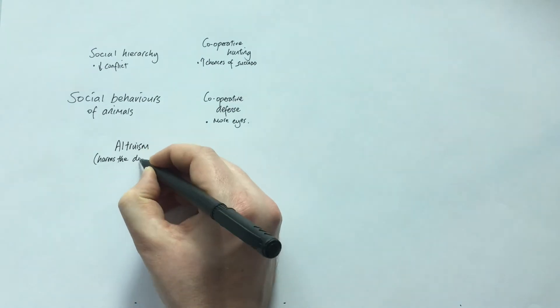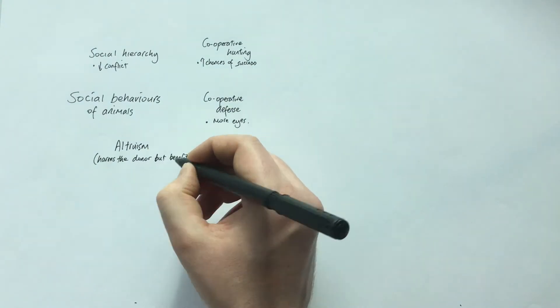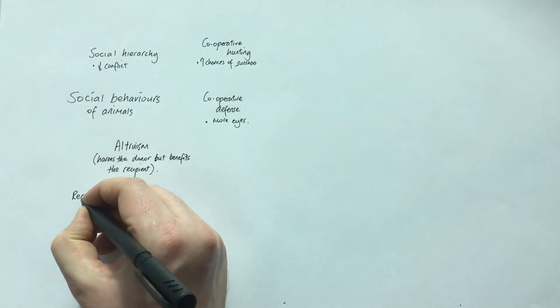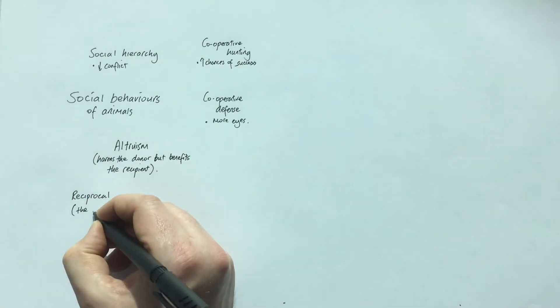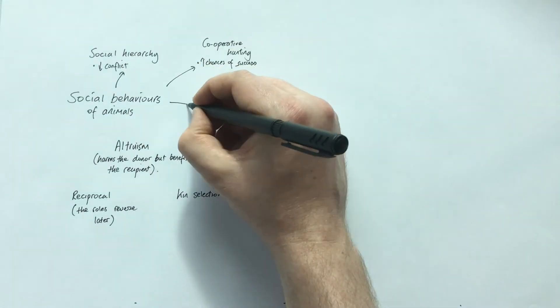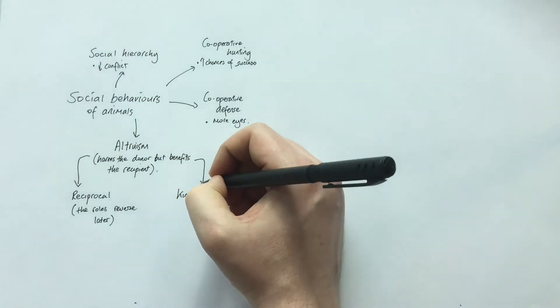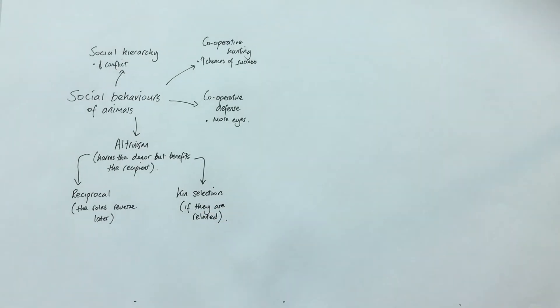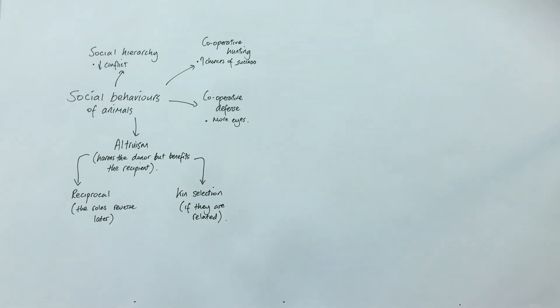We'll look in a little bit more detail now at altruism. So altruistic behaviour is any sort of behaviour where an animal is doing harm to itself for the benefit of another. Two types you need to know about.